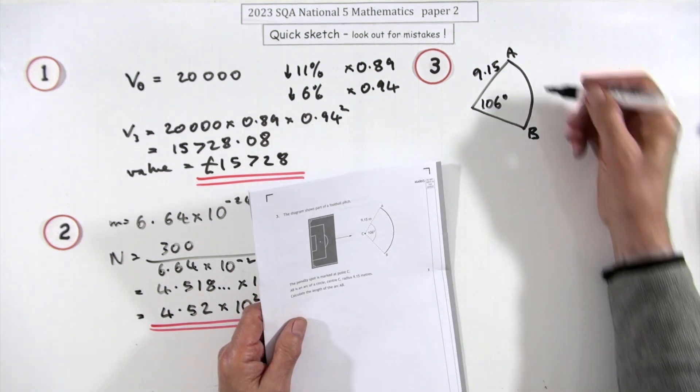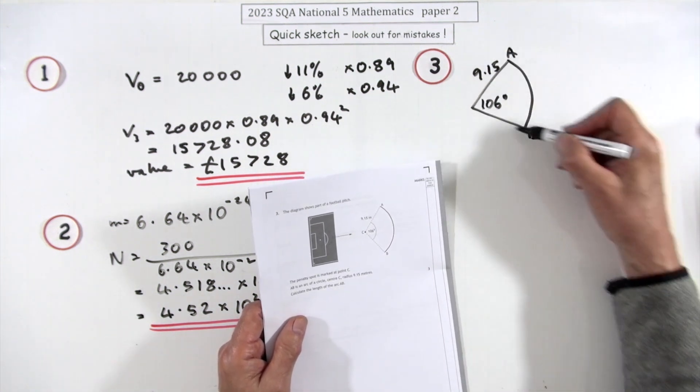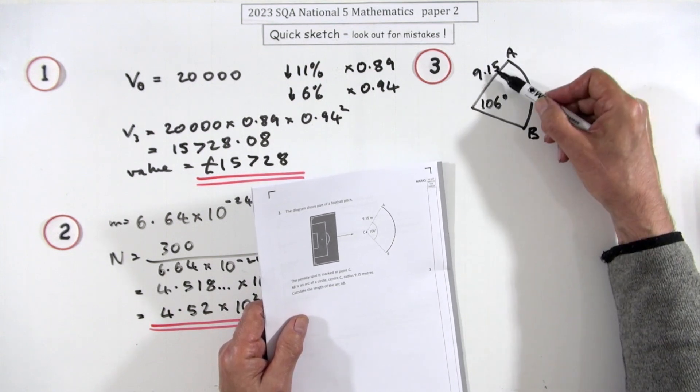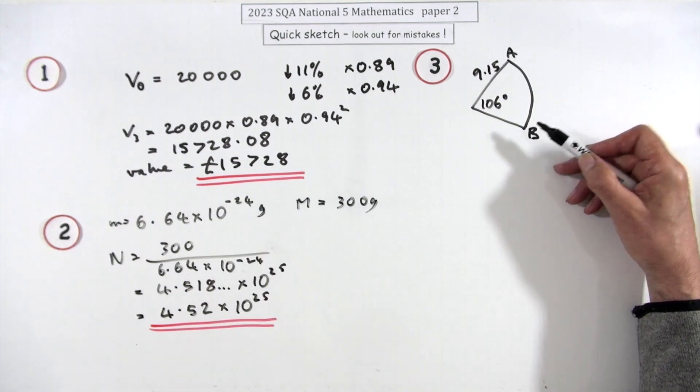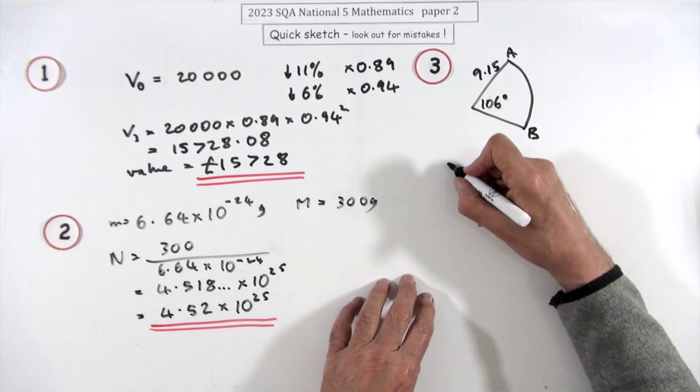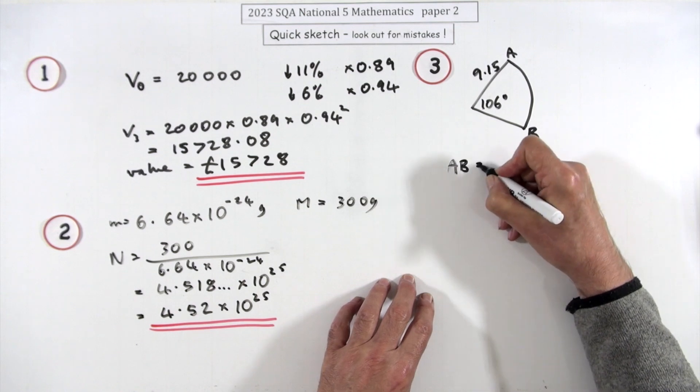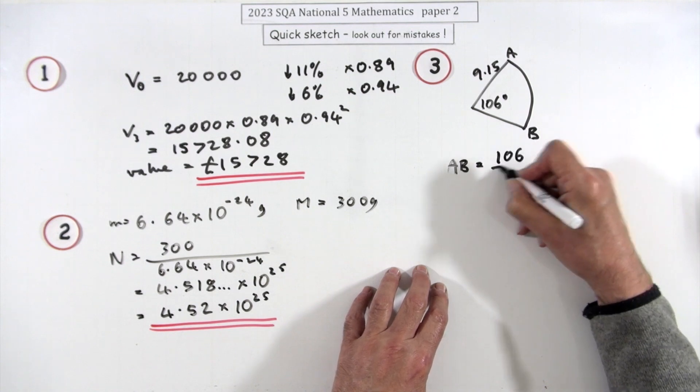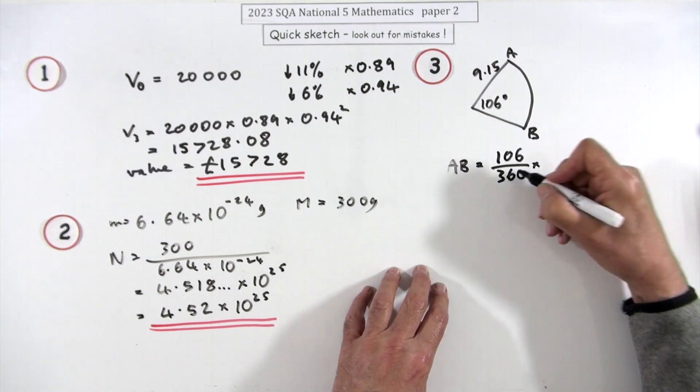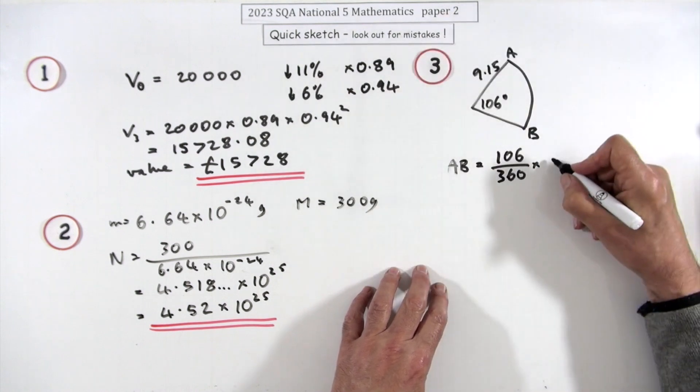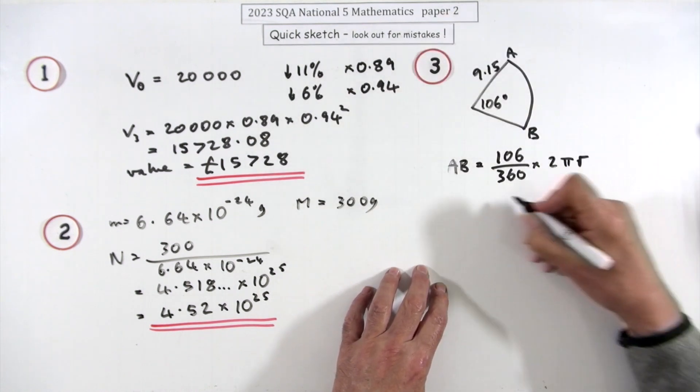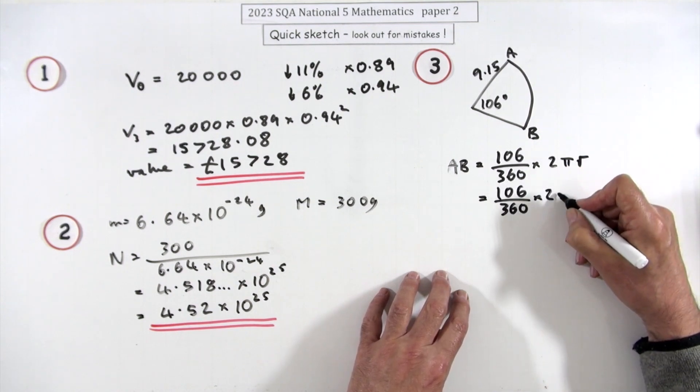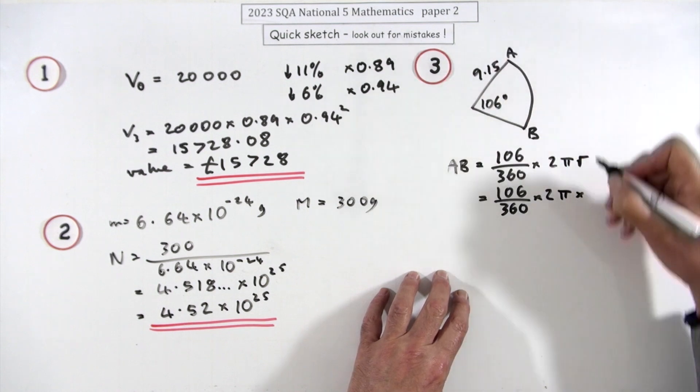Number three, three marks for what's the length of this arc. You've got the sector of a circle, there's a slice of a circle, 106 degrees in it, its radius is 9.15. So what's that distance for that arc? Well it's a fraction of a circle. That arc will be whatever fraction of a circle you've got, which is 106 out of the 360 degrees. It'll be that fraction of the total circumference, which is πd or 2πr. So it's 106 over 360 times 2π times 9.15.